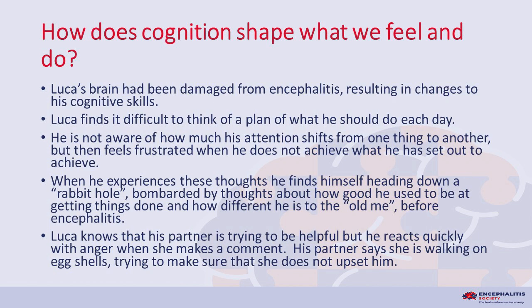How does cognition shape what we feel and do? Luca's brain had been damaged from encephalitis, resulting in changes to his cognitive skills. He finds it difficult to think of a plan of what he should do each day. He is not aware of how much his attention shifts from one thing to another, but then feels frustrated when he does not achieve what he has set out to achieve. When he experiences these thoughts, he finds himself heading down a rabbit hole, bombarded by thoughts about how good he used to be at getting things done, and how different he is to the old me before encephalitis. Luca knows that his partner is trying to be helpful, but he reacts quickly with anger when she makes a comment. His partner says she is walking on eggshells, trying to make sure that she does not upset him.